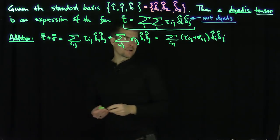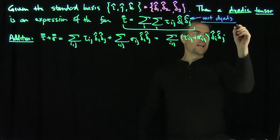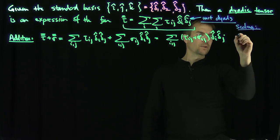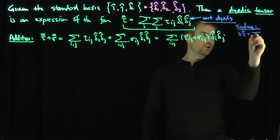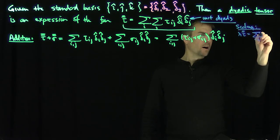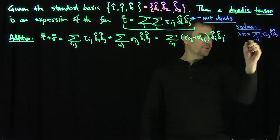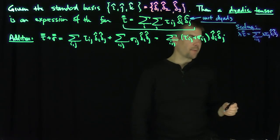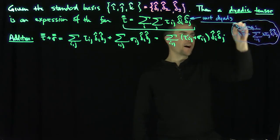And of course, how would you scale a dyadic tensor? That would be equally easy. If I said, what's lambda times tau-bar-bar? Well, that would be just the sum over i and j of lambda*tau_ij delta-i-hat delta-j-hat. So you would just scale all the components tau_ij by that lambda — that's the scaling.